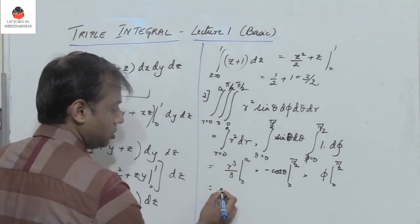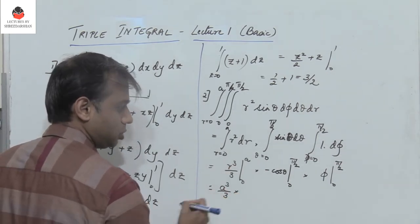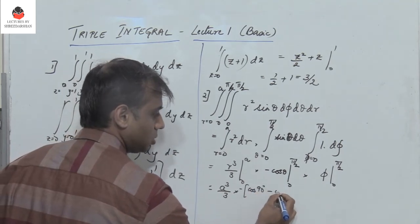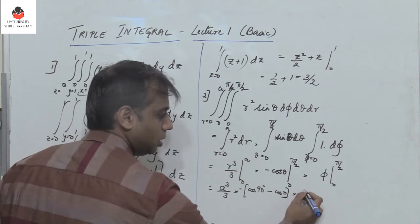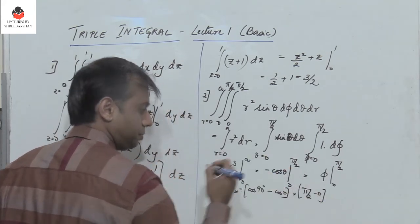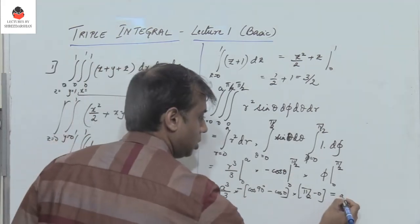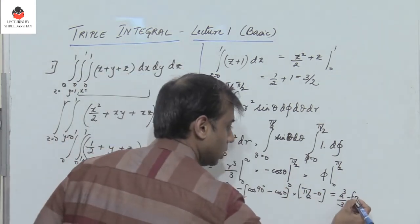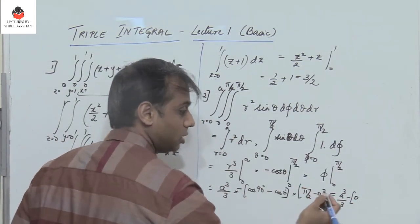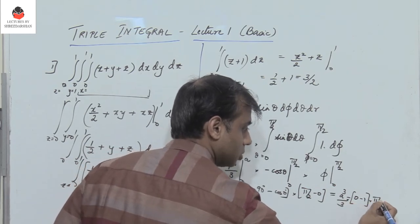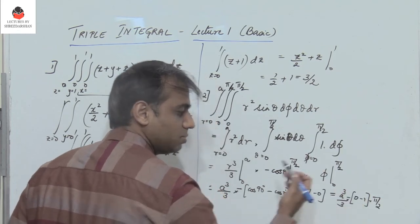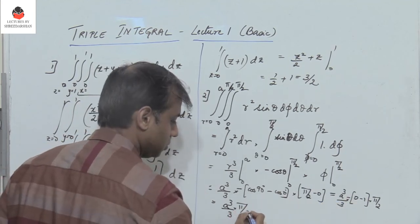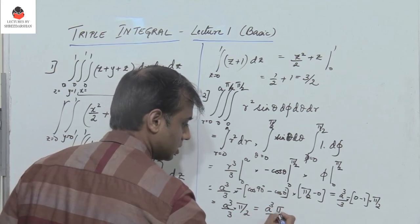Substituting the limits: for r we get a³/3. For θ we evaluate −cos(π/2) − (−cos 0) = −0 + 1 = 1, noting the negative sign makes it minus of (0 − 1), so minus times minus is plus 1. For φ we get π/2 − 0 = π/2. Therefore the answer is a³/3 × 1 × π/2 = a³π/6.